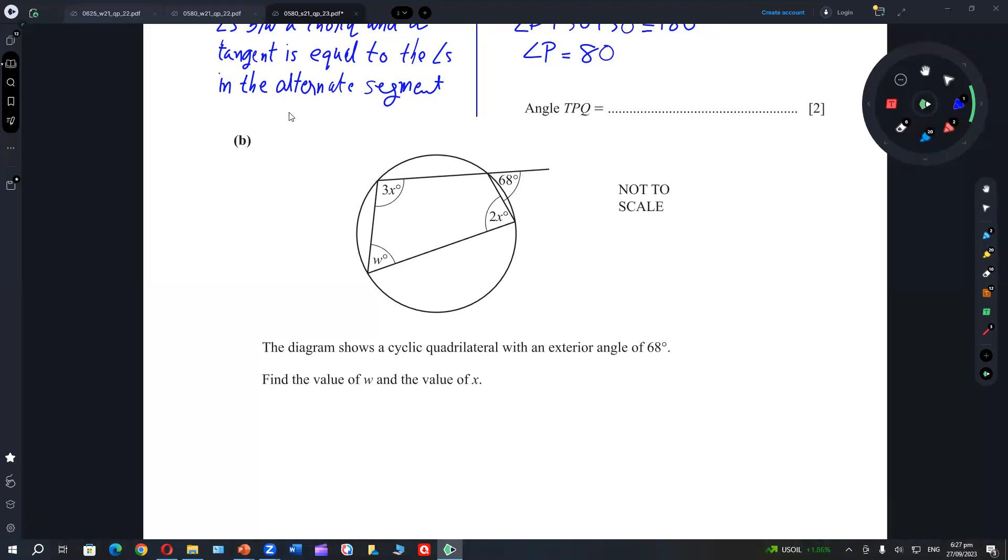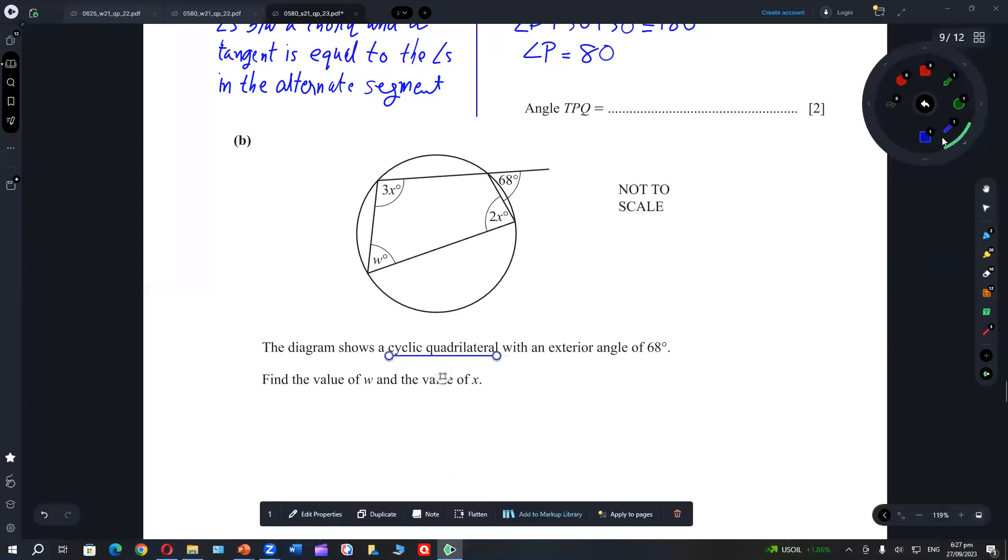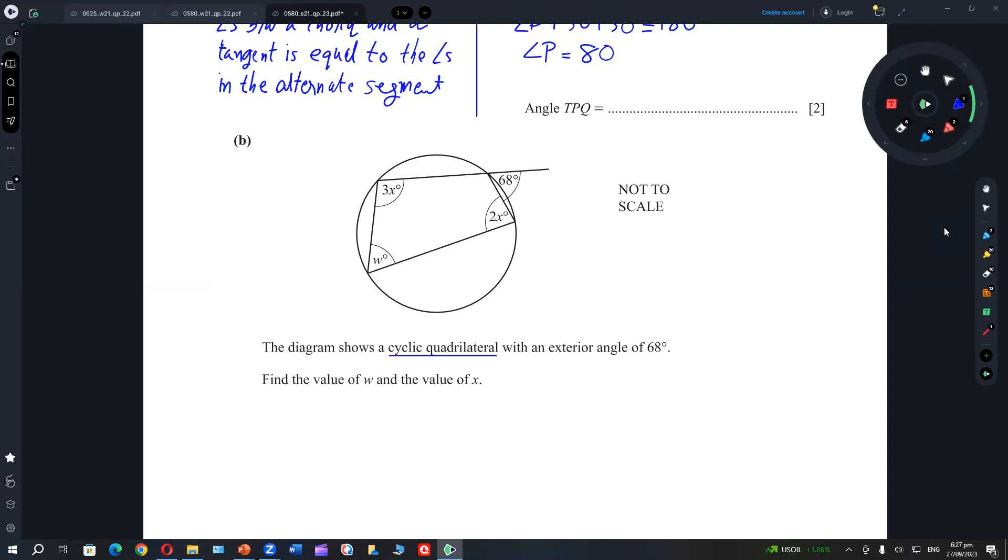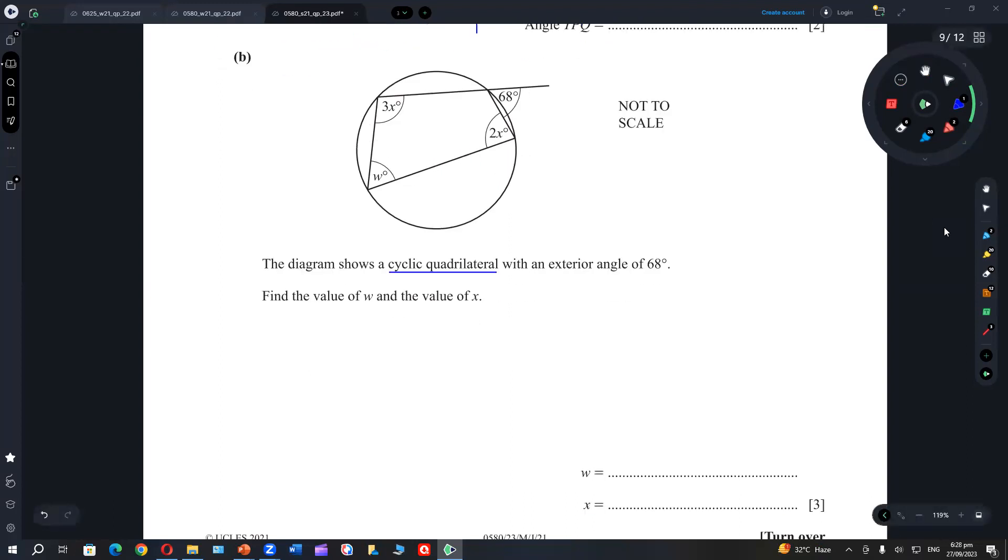The diagram shows a cyclic quadrilateral. What is a cyclic quadrilateral? You can see the notes always because obviously presently you are focusing on other subjects. So you can look at the notes and can you tell me what is a cyclic quadrilateral?